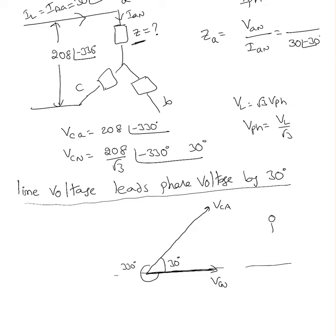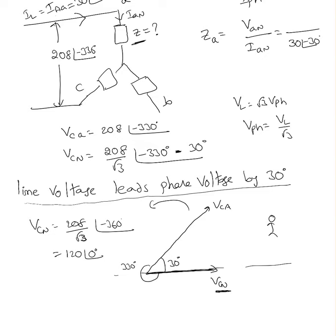How do you know that it is leading? You stand at one point and rotate the vectors in anti-clockwise direction. When you rotate anti-clockwise, VCA comes first — that is leading VCN. The line voltage leads phase voltage by 30 degrees, so VCN is right there. In this case it's a minus, so VCN equals 208 over square root 3 at an angle of minus 360. Minus 360 is nothing but zero, so 208 over square root 3 — that is 120 at an angle of zero.